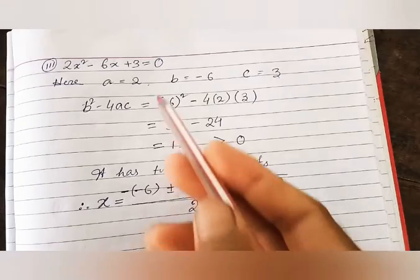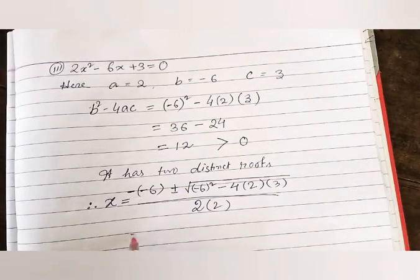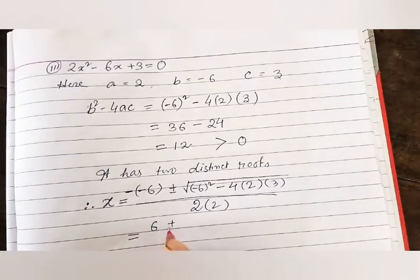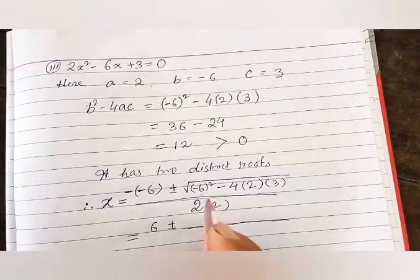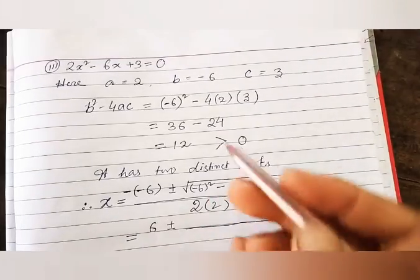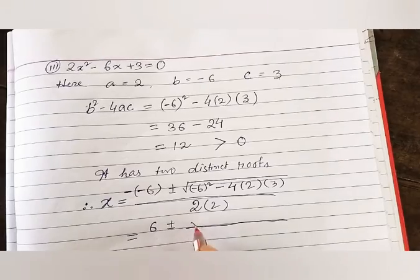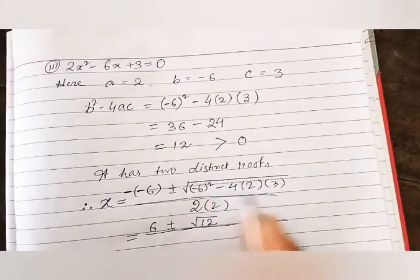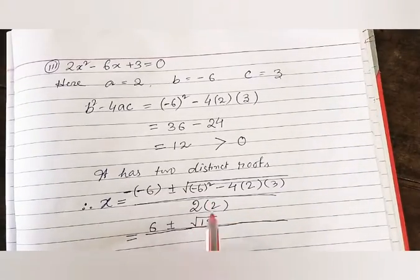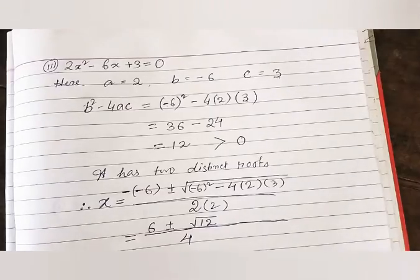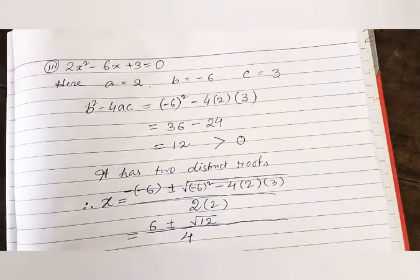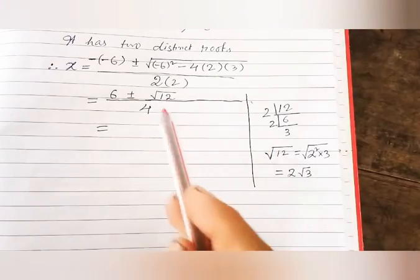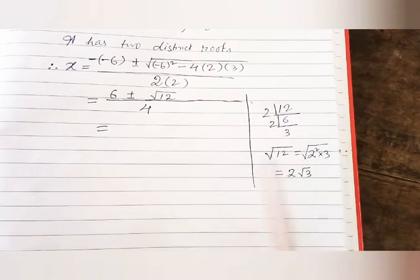It gives +6 ± √12 divided by 4. Now √12 can be factorized: 12 = 4 × 3 = 2² × 3, so √12 = 2√3.